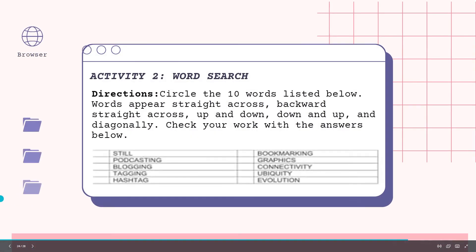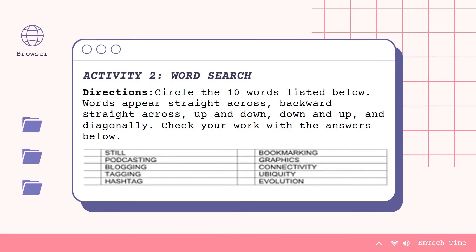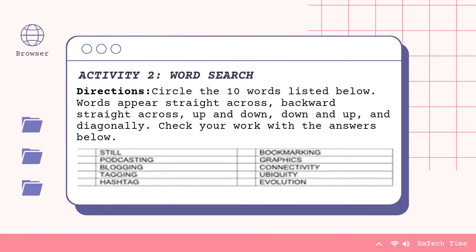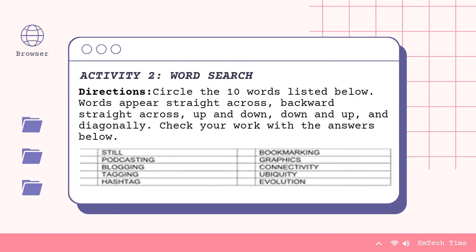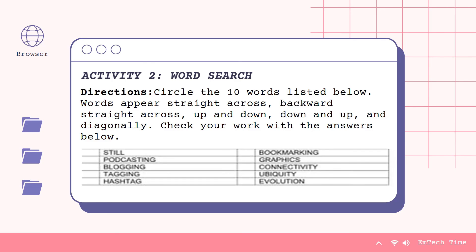For Activity 2, it is a word search. Directions: Circle 10 words listed below. Words appear straight across, backwards, up, down, and diagonally. Check your work with the answers below. The 10 words are: podcasting, blogging, tagging, hashtag, bookmarking, graphics, connectivity, ubiquity, and evolution.